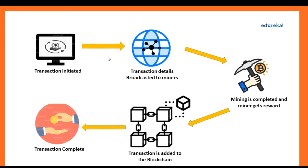Let's say someone initiates a transaction. That transaction will go into the Ethereum blockchain and will be in an unconfirmed state. In order to make it confirmed, miners will fetch that unconfirmed transaction, solve the complex mathematical problem, and once the miner is able to solve it, the miner will add that block to the existing blockchain — and this is how the transaction gets completed.